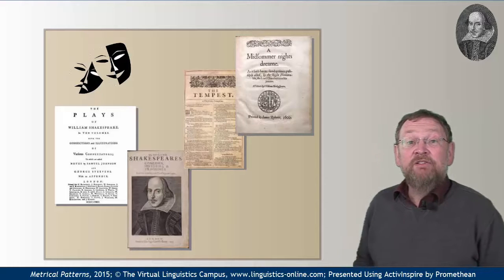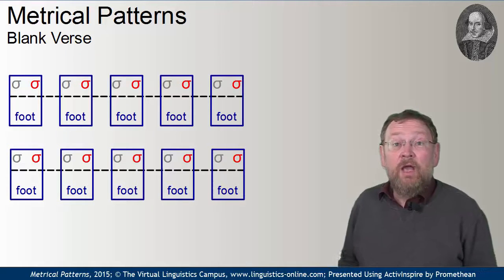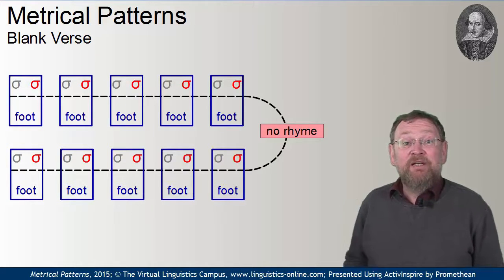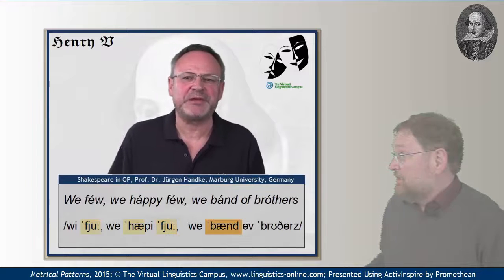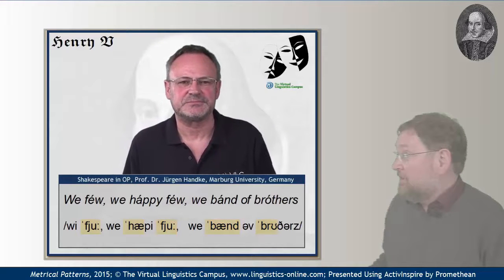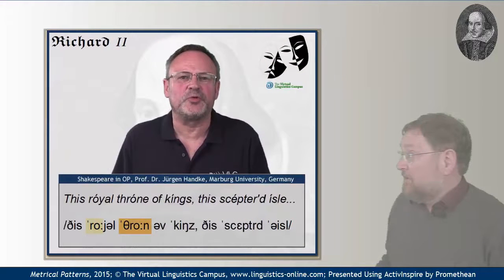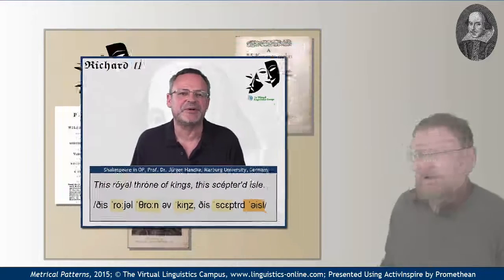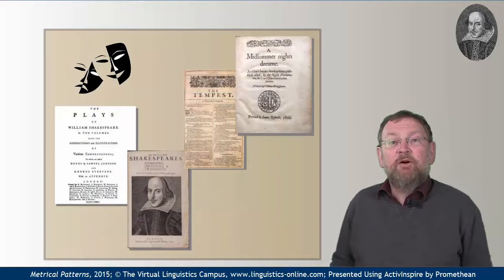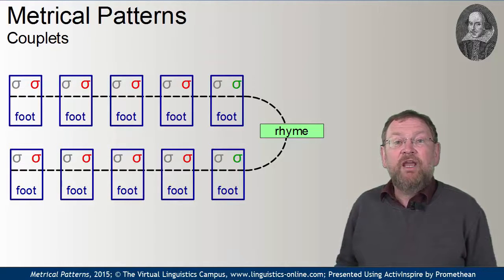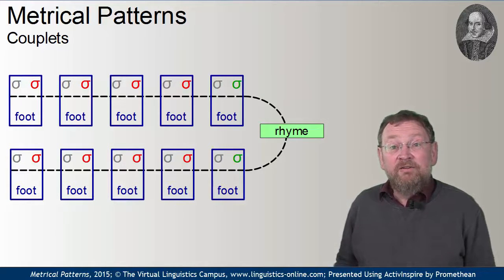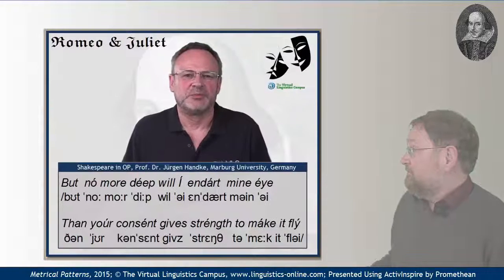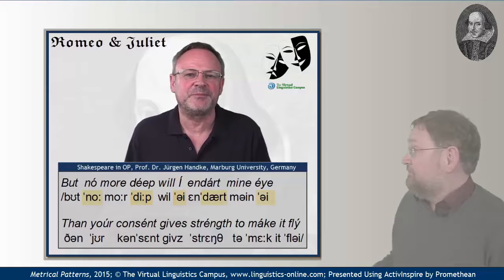As for the rhyming patterns, Shakespeare commonly wrote his plays in blank verse. Blank verse is an unrhymed iambic pentameter. Here are two examples: 'We few, we happy few, we band of brothers.' 'This royal throne of kings, the sceptred isle.' Interestingly, Shakespeare often signaled a change of scenes or the entering of new characters by means of a so-called couplet — that is, two lines whose final words rhyme. Here is an example from Romeo and Juliet: 'But no more deep will I endart mine eye / Than your consent gives strength to make it fly.'